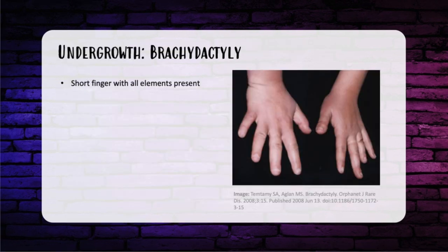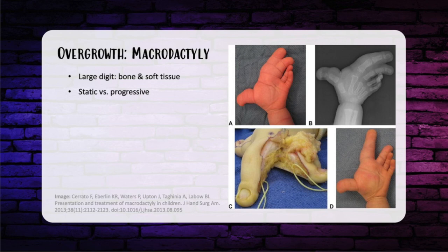Brachydactyly is a short finger with all skeletal elements present but reduced in size, most commonly affecting the middle phalanx of the small and ring fingers. If there's no functional deficit, observe. Surgery involves distraction osteogenesis. On the opposite end of the spectrum, macrodactyly is a disproportionately large digit including both soft tissue and skeletal elements. There are static and progressive forms. It's associated with Beckwith-Wiedemann syndrome and neurofibromatosis, and the most common manifestation is lipomatous fibromatosis of the nerve. Treatment involves limiting growth with epiphysiodesis or reduction by debulking soft tissue and osteotomy.